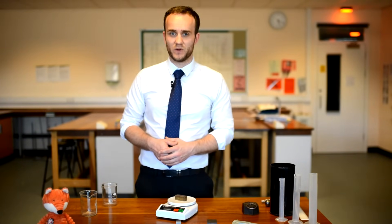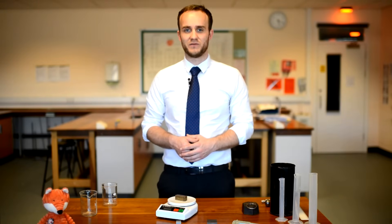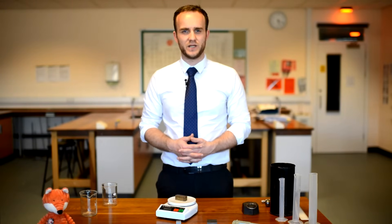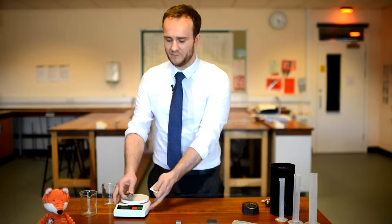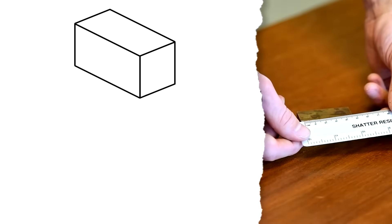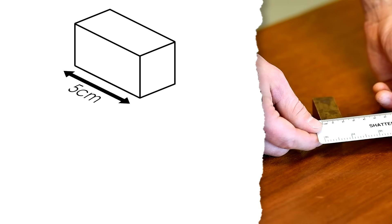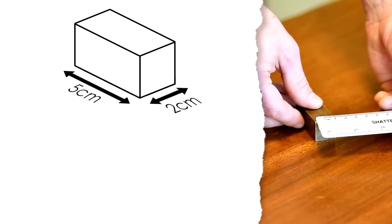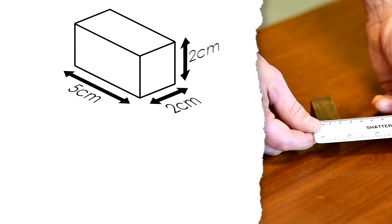Next we need to find the volume of this block, and we're going to measure the three sides of it: height, width, and length. There are a couple of different ways you can do this. You can use your normal ruler. Measuring the length, I can see that is five centimetres. The width of it is two centimetres. And the height of it again is two centimetres.